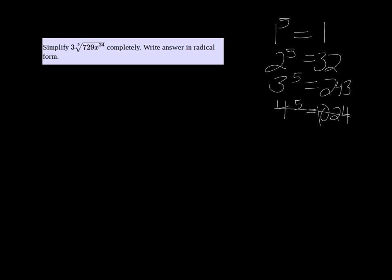We're going to try to break down 729, see if any of these other numbers will go into it. Well, it just so happens that 729 divided by 243 is equal to 3.